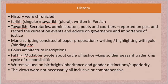The Delhi Sultanate is also known for the coins it introduced and for the architecture. Delhi Sultanate kings were known for the inscriptions they ensured were made in stones and pillars around the kingdom. There was a person called Fakhr-i-Mudabbir who wrote about the circle of justice.